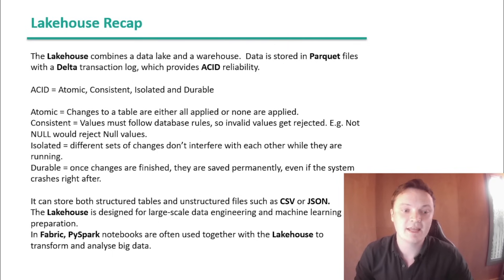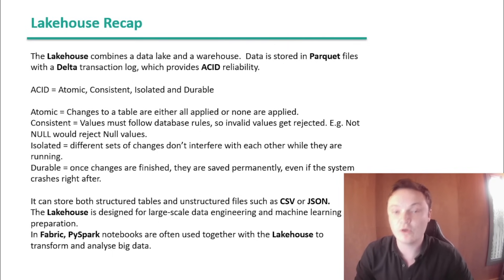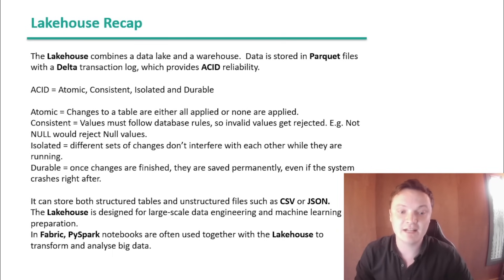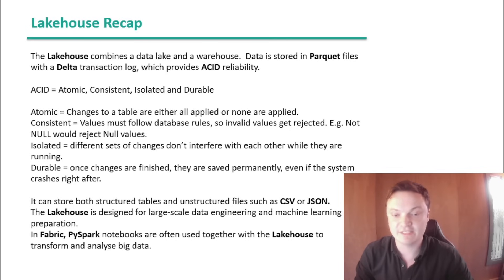For Fabric, atomic means changes to a table are either all applied or none were applied. Consistent means that values must follow database rules, so invalid values get rejected — for example, NOT NULL would reject null values.